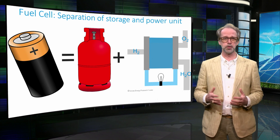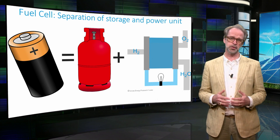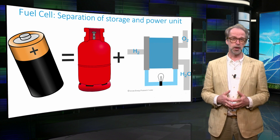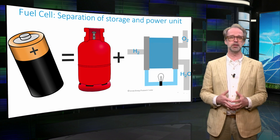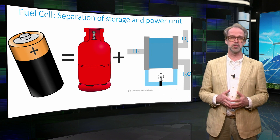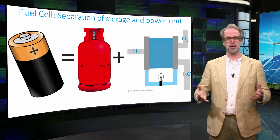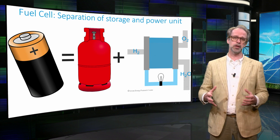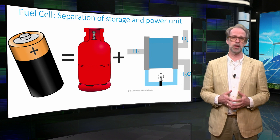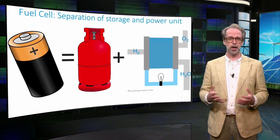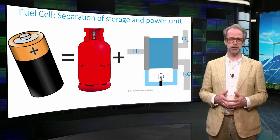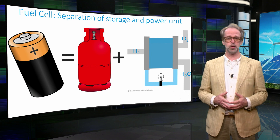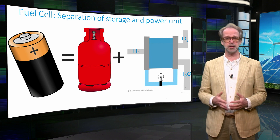In the fuel cell that converts the hydrogen into electricity, the storage functionality — the amount of hydrogen — is separated from the conversion to electricity. Hence, to extend the range of a fuel cell car, one simply increases the amount of hydrogen stored, without the need to change anything in the fuel cell. We will explain the working of a fuel cell in the next lecture.